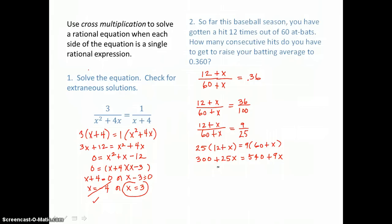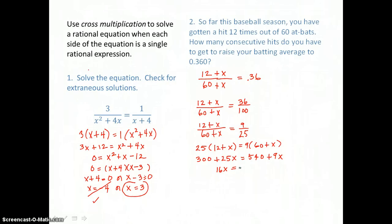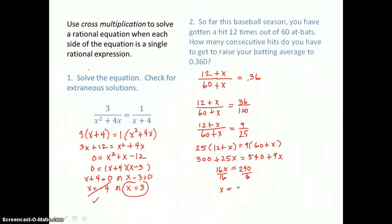Giving my x terms on the left: 25x take away 9x is 16x. Getting my constant terms on the right by subtracting 300, I get 240. When I divide both sides by 16 to get x alone, I find that the number of consecutive hits you must make is 15. So 15 hits are needed to raise your batting average to 0.360.